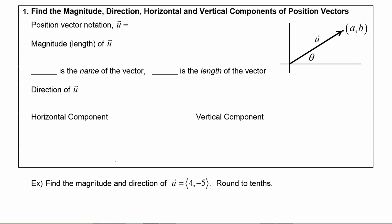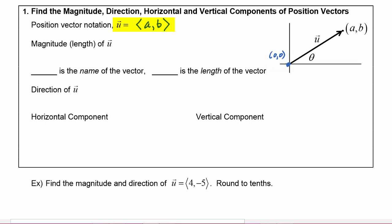First, let's understand what position vector notation is. The vector u is equal to ⟨a, b⟩ — that sharp bracket notation means this is the vector that has an initial point at the origin and a terminal point at (a, b). Remember: when there are parentheses around a, b, that names a single point; when there are these pointy brackets around a, b, it means the vector that starts at the origin and ends at the point (a, b).